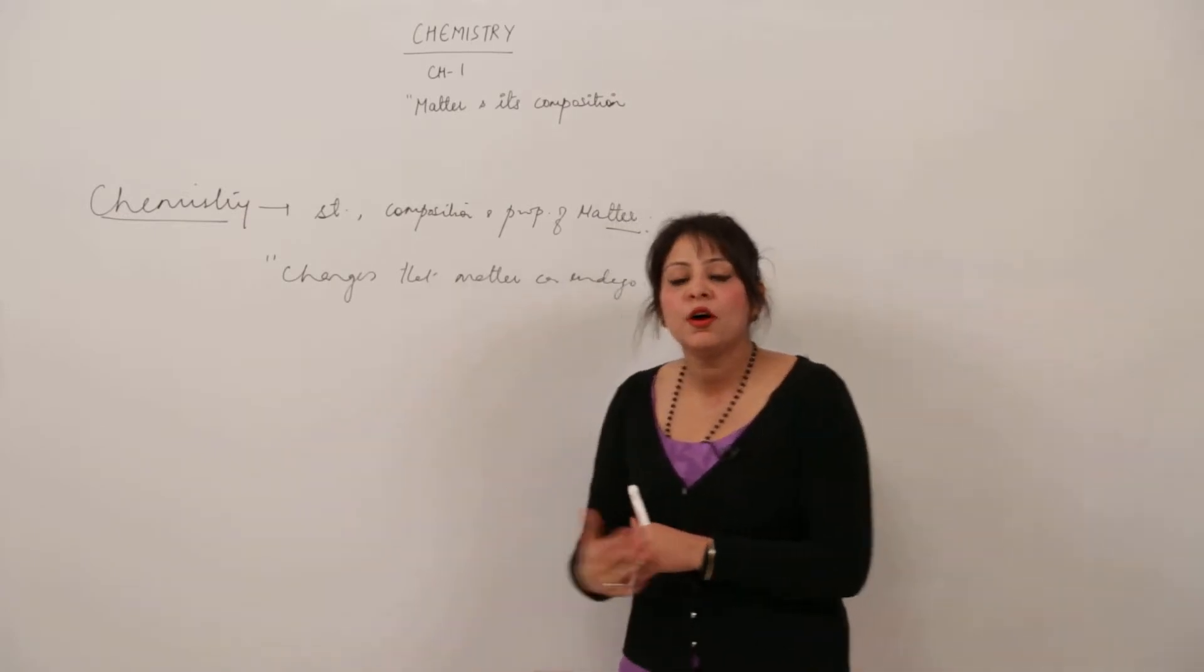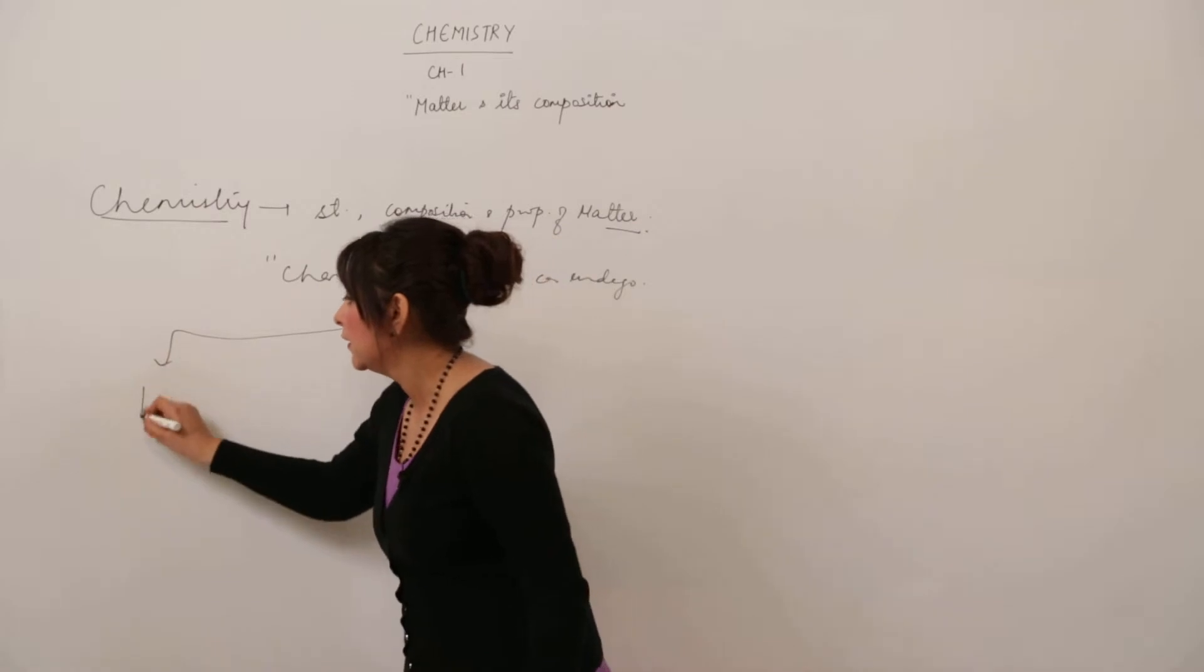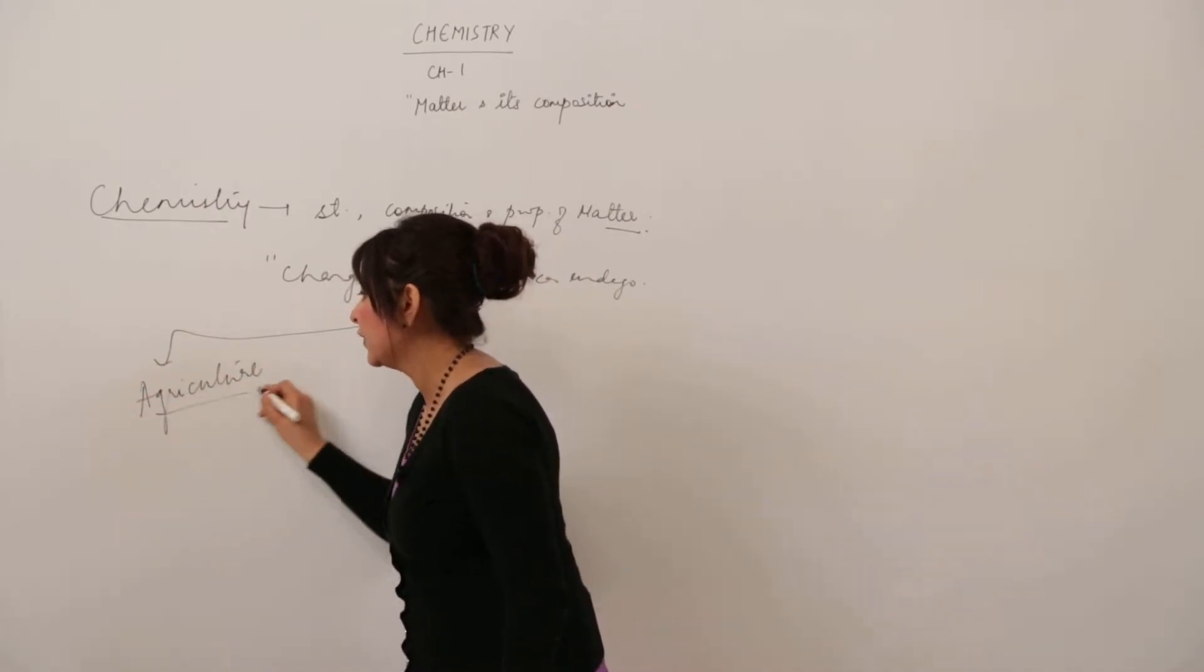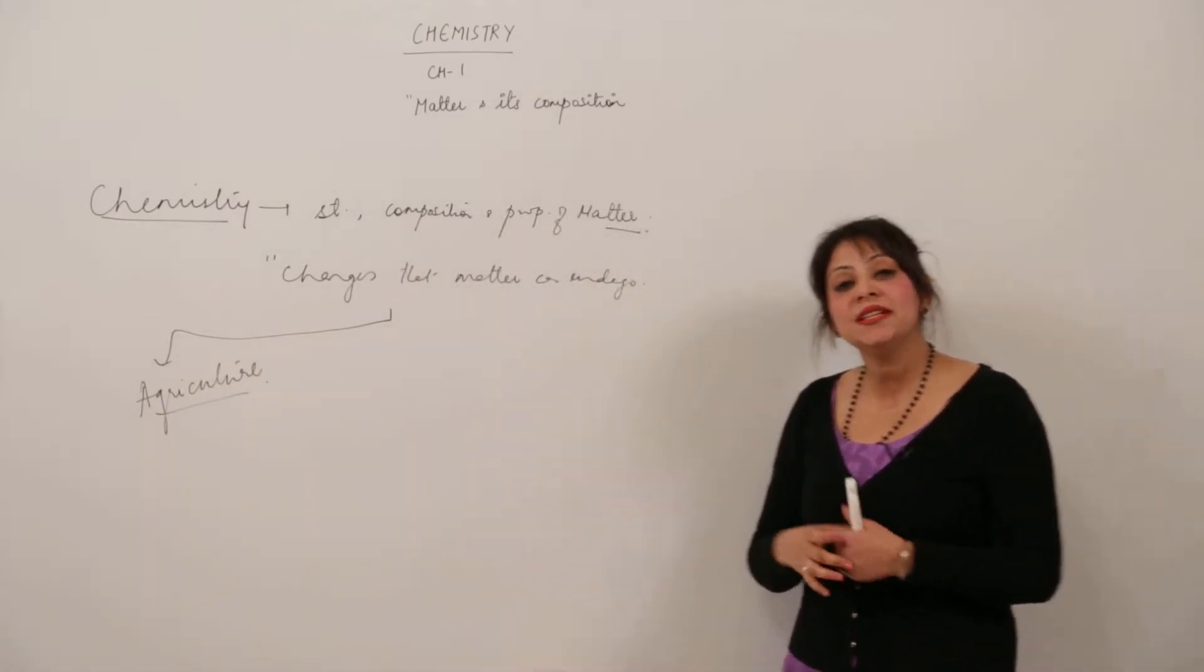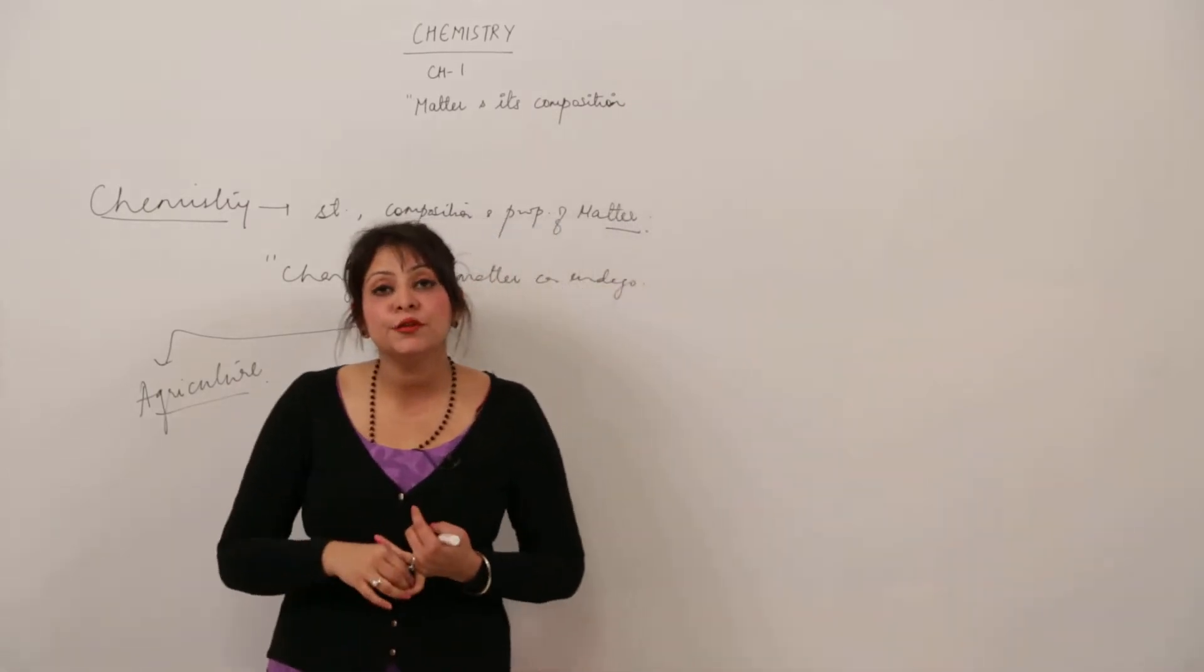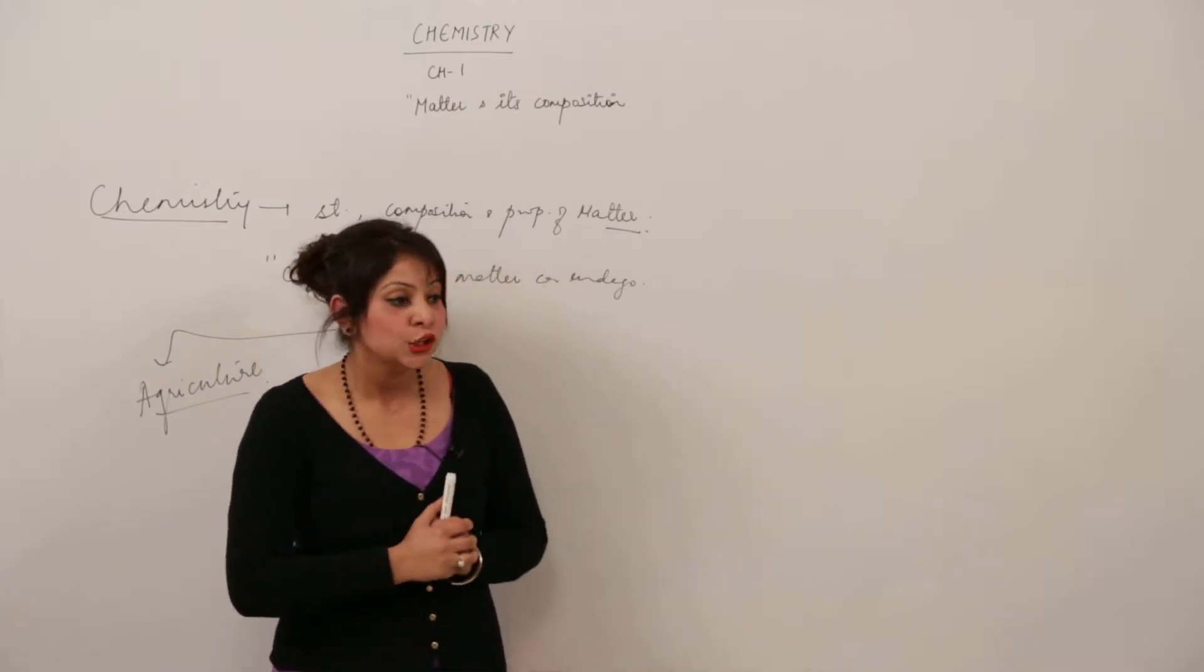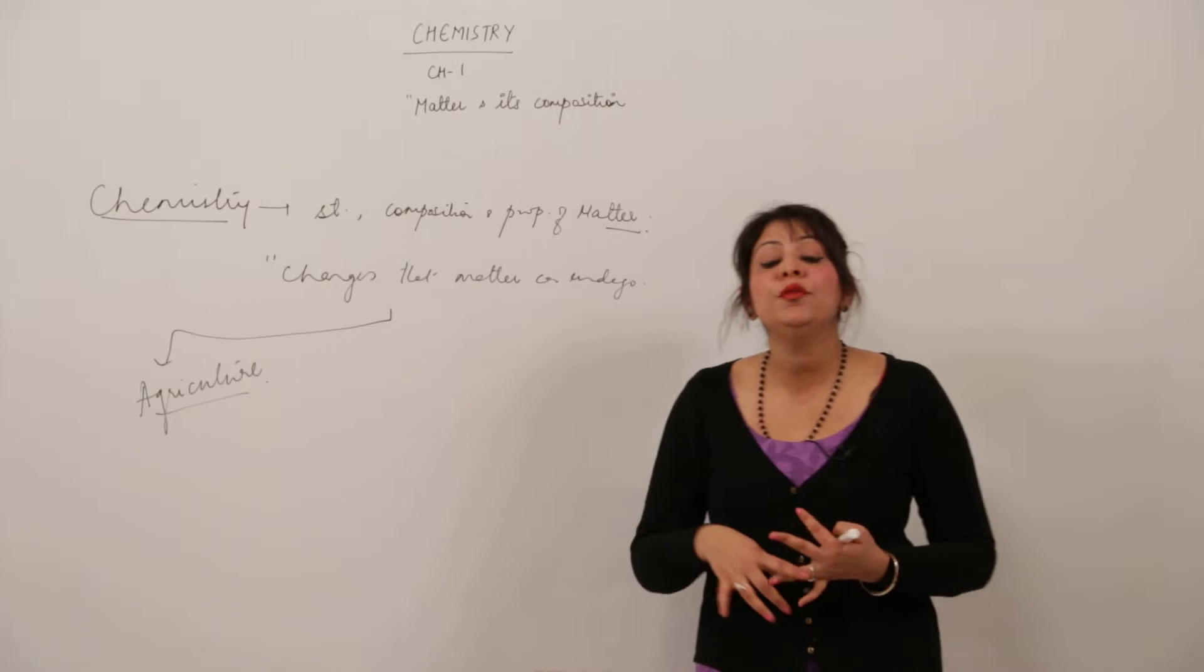So let us discuss and try to brief the scope of chemistry in our life. It deals in the branch of agriculture as well. How? As we know that population is increasing day by day, and the demand for food, variety of food, and quality of food has undergone a lot of change.